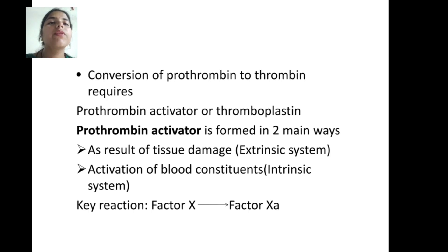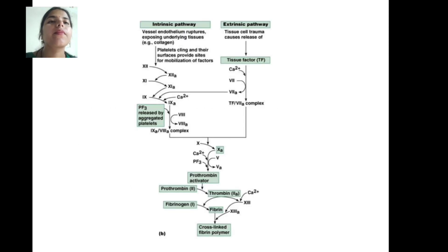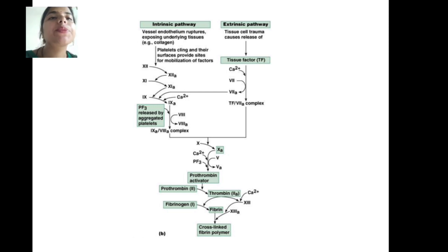In the conversion of prothrombin, prothrombin is a key requirement of this process. The prothrombin activator or thromboplastin is formed via two main pathways: the extrinsic system and the intrinsic system. In the intrinsic pathway, vessel endothelium structures expose the underlying tissue.